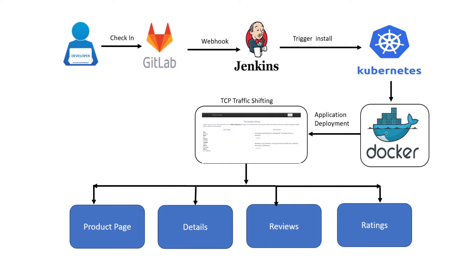There are three versions of the reviews microservice. Version V1 doesn't call the rating service. Version V2 calls the rating service and displays each rating as one to five black stars. Version V3 calls the rating service and displays each rating as one to five red stars.